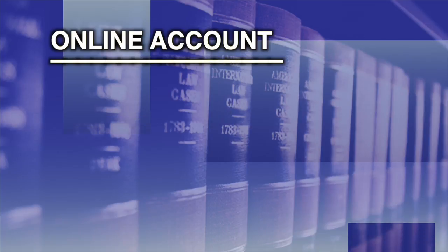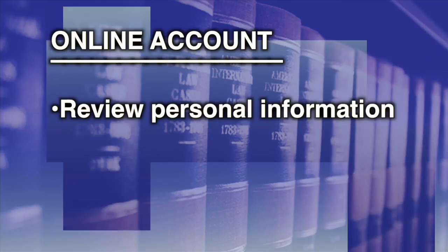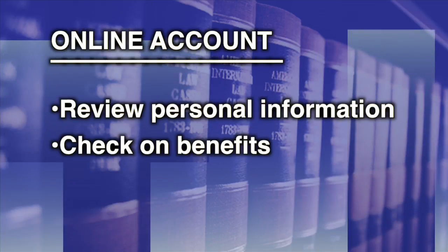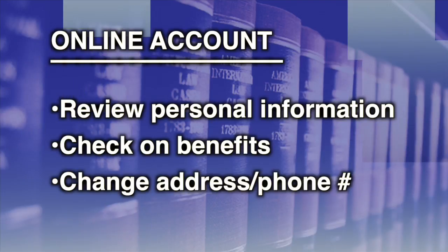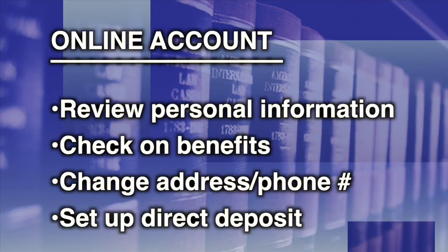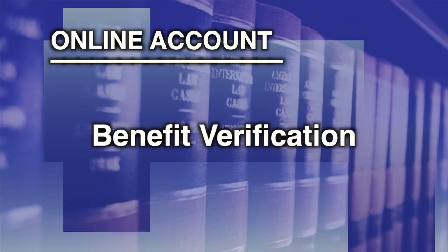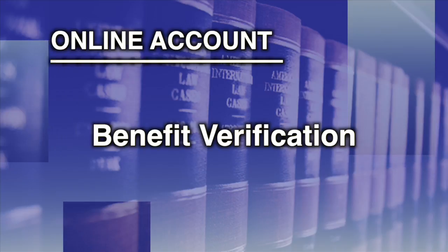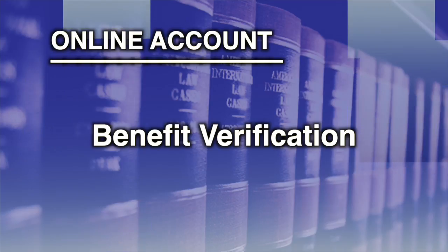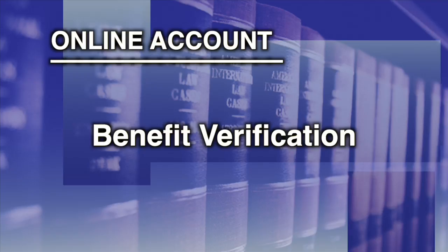The Social Security Administration no longer sends out paper statements, but you can still get information or make changes by setting up an online Social Security account. Setting up an online account will allow you to review your personal information, check on your benefits, make address and phone number changes to your account, and even set up direct deposit. You will have access to benefit verification that states if you've ever received benefits, are currently receiving benefits, or if you've applied for benefits.